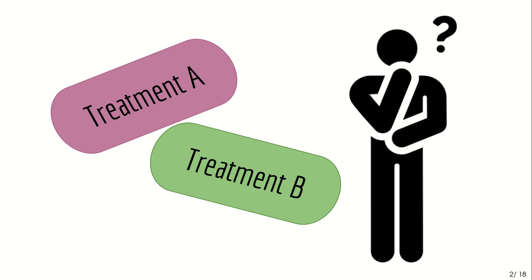This talk is about the idea that each individual patient needs to decide, together with a doctor, which treatment to take for their disease. Currently, we do not analyze individual patients but instead analyze global treatment effects. We conduct a randomized clinical trial, randomizing some patients to treatment A and others to treatment B, and then estimate what we call a causal treatment effect.